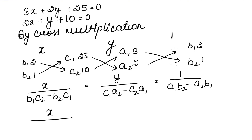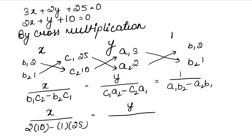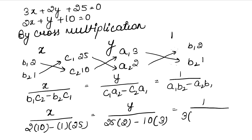So substituting values: x upon (B1 was 2 and C2 was 10, minus B2 was 1 and C1 was 25). For y: C1 was 25 and A2 was 2, minus C2 was 10 and A1 was 3. For the constant: A1 was 3, B2 was 1, minus A2 was 2, and B1 was 2.